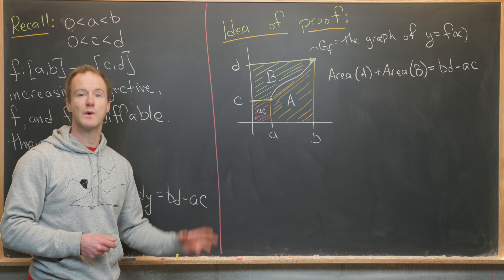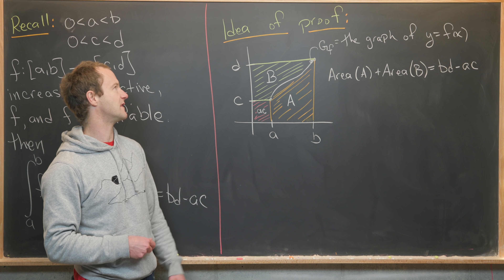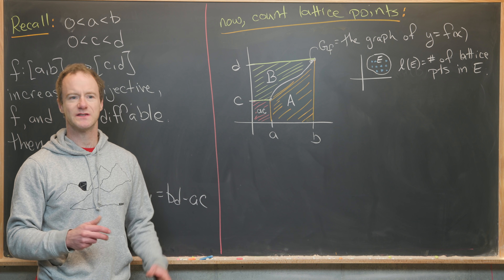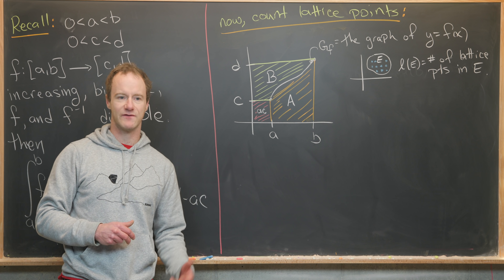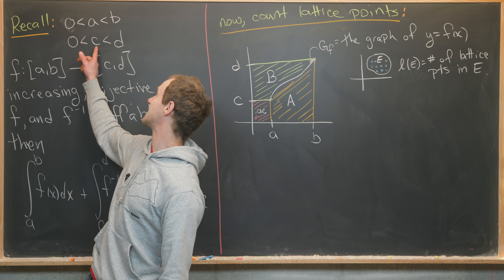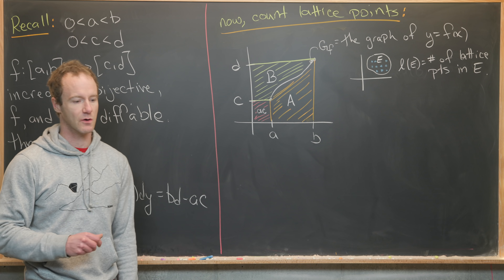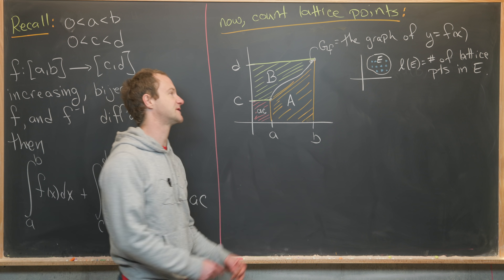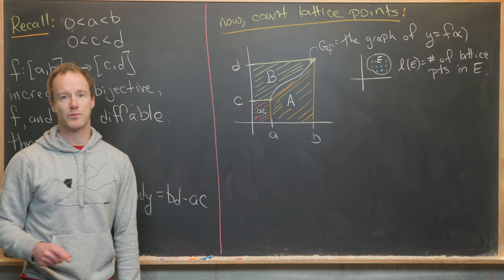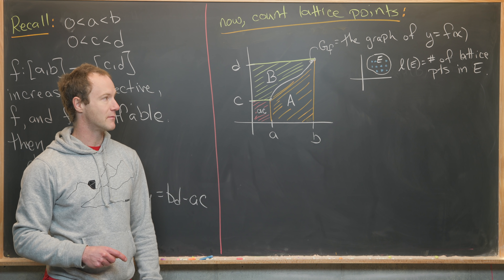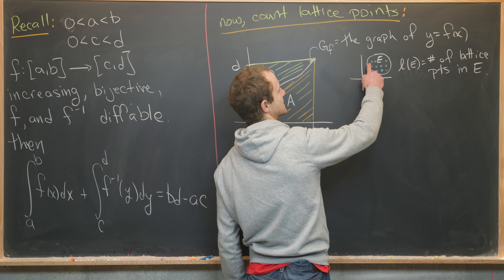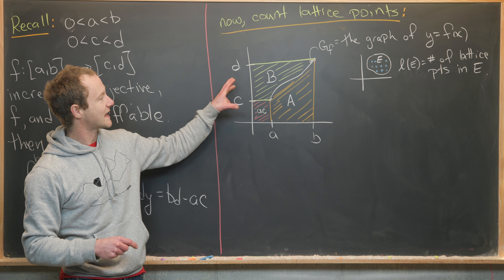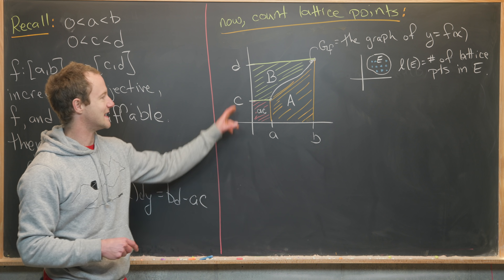Today, instead of looking at the area of these regions, we want to count the number of lattice points in each region. Lattice points are points with integer coordinates, like (2, 3) or (-5, 10). Since a and c are greater than zero, and thus b and d are also greater than zero, we're only dealing with lattice points with positive integer coordinates. I'll introduce the notation L(E) for the number of lattice points in a region E — counting all the integer-coordinate points within that region.